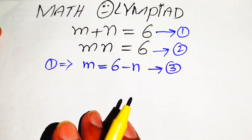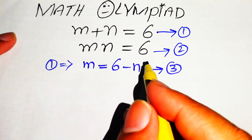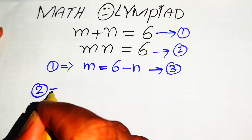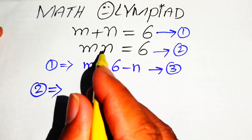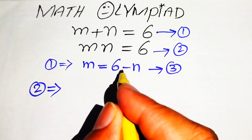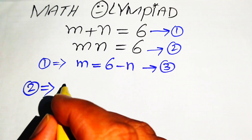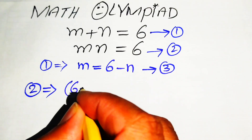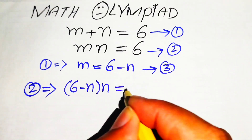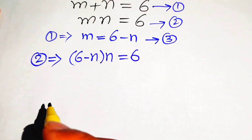We now use equation 3 in equation 2. Equation 2 gives us m times n, and substituting m equals 6 minus n, we get (6 minus n) times n equals 6. The next step requires some simplification.